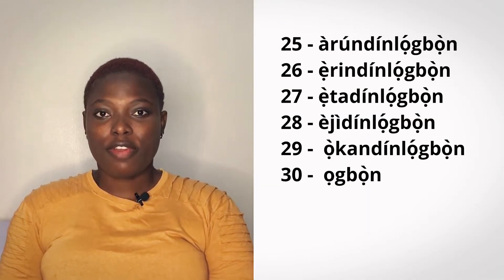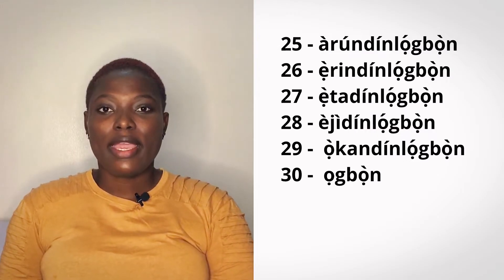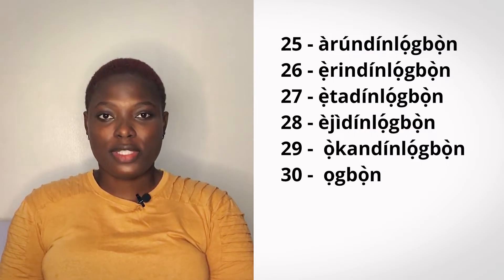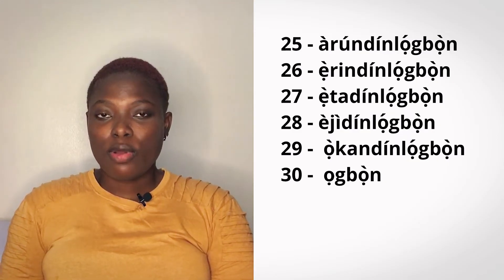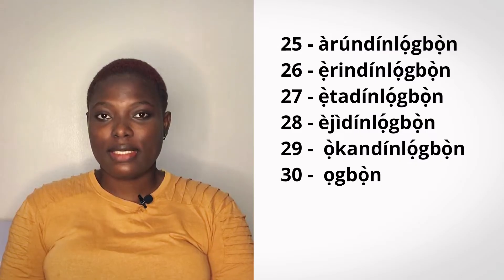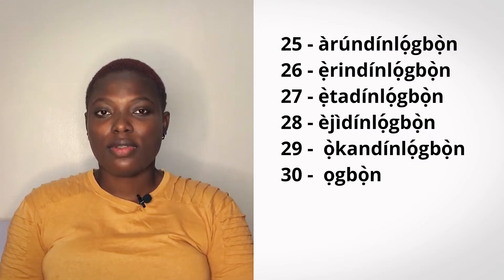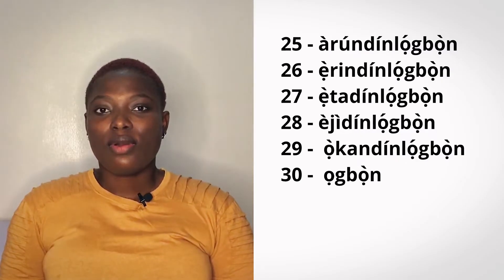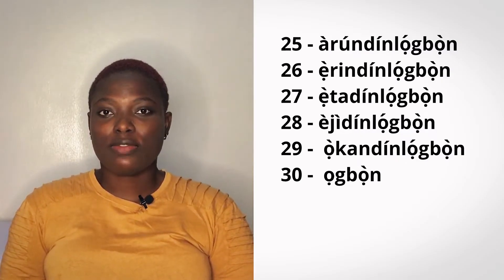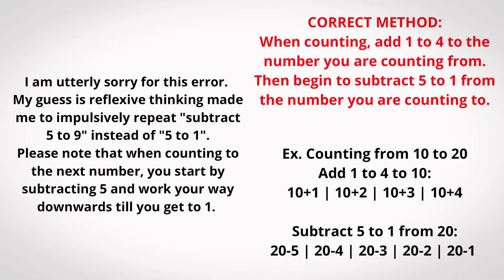Now we are going to be subtracting from 30: 5 subtracted from 30, 4 subtracted from 30, 3 subtracted from 30, 2 subtracted from 30, 1 subtracted from 30. Then 30 is ogbon. So ogun is 20 and we counted from ogun adding 1 to 4. Ogbon is 30, and we subtracted 5 to 9 from 30.